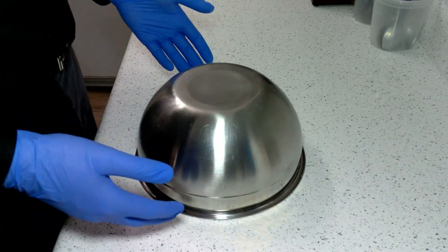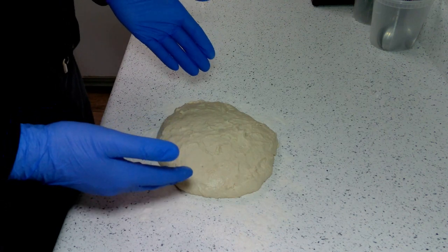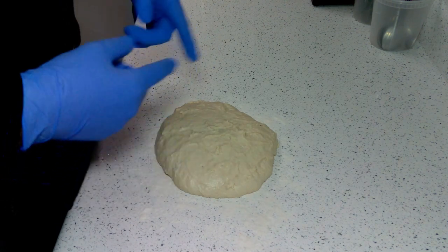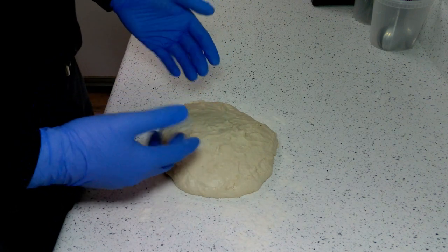It's been about 30 minutes. I'm going to go ahead and uncover my dough. It's gotten a little bit bigger because it was trying to rise just a little bit. That's why we use the room temperature water is to kind of slow that process.